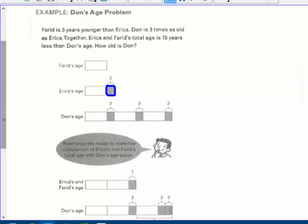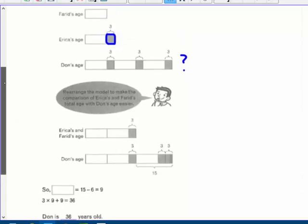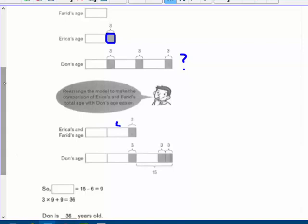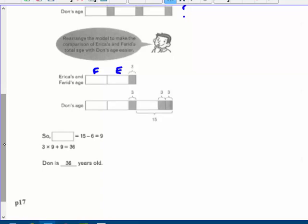How old is Don? So how old is Don? There's your question mark. Rearrange the models to make the comparison of Erica and Farron's total age with Don's age. So Erica single bar plus her three. So this part's Erica and this part is Farron. If you add them together, it says Erica and Farron's total age is 15, right? So their difference is 15 years less than Don. Sorry, 15 years less.